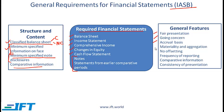Regarding materiality and aggregation: omissions or misstatements of items are material if they could individually or collectively influence the economic decisions that users make on the basis of the financial statements. Each material class of similar items should be presented separately. No offsetting means that assets and liabilities, and income and expenses, are not allowed to offset each other unless explicitly permitted by IFRS. You cannot report a net accounts receivable of 10 if accounts receivable is 100 and accounts payable is 90 — you must show both.